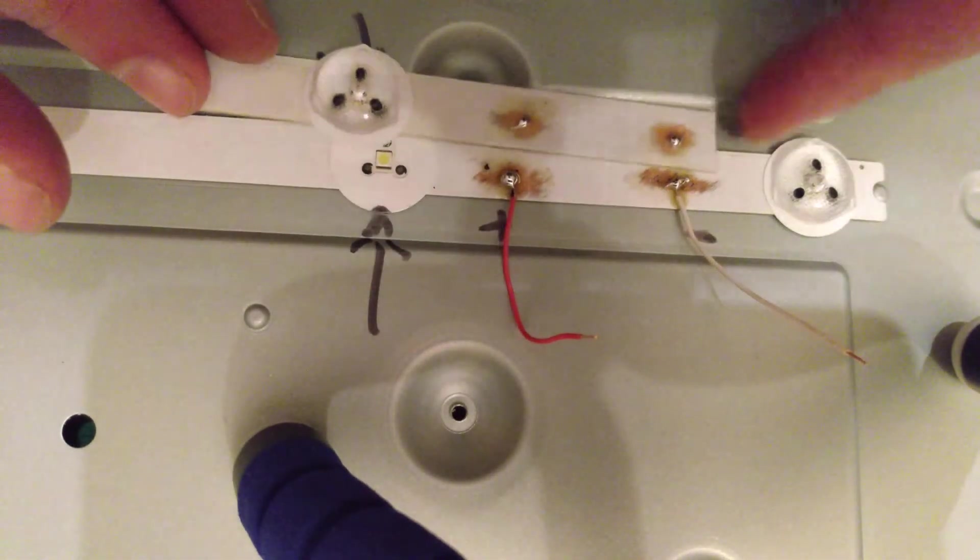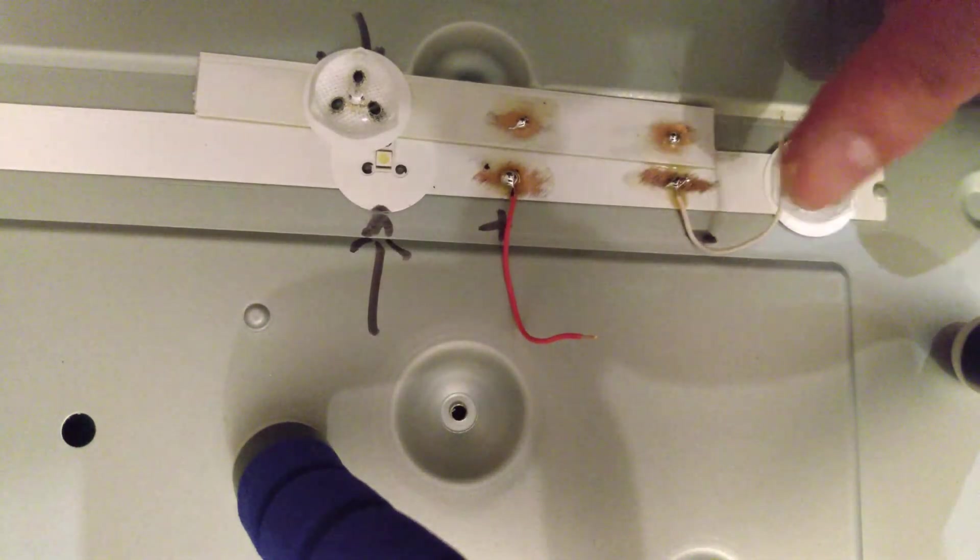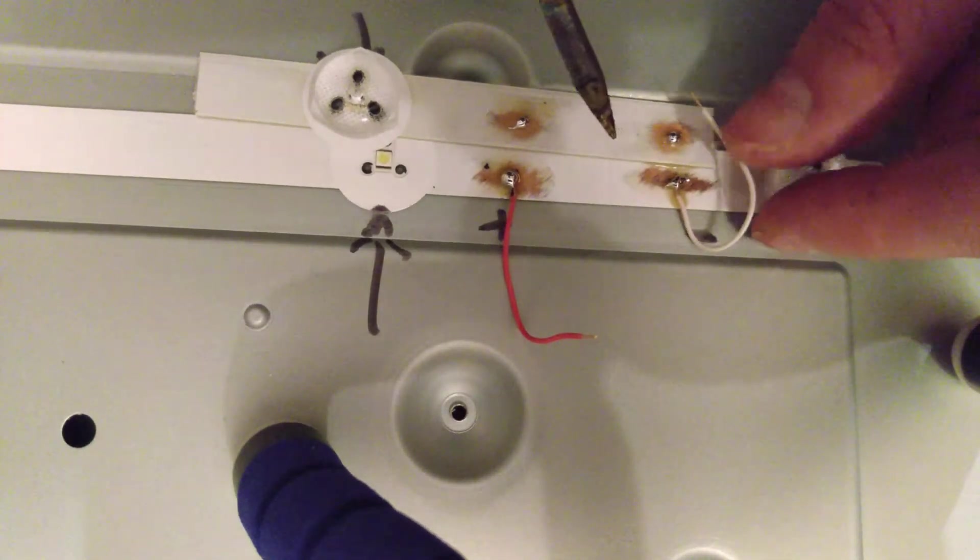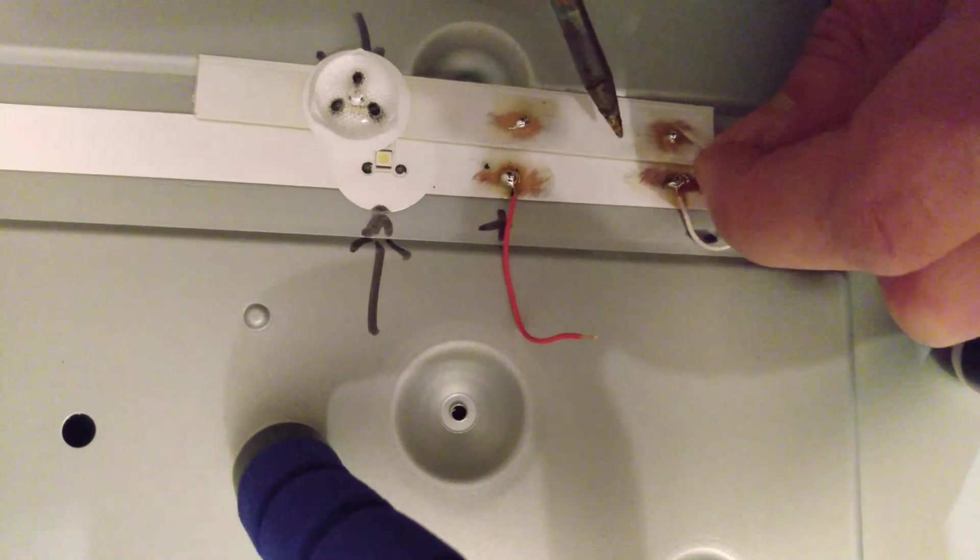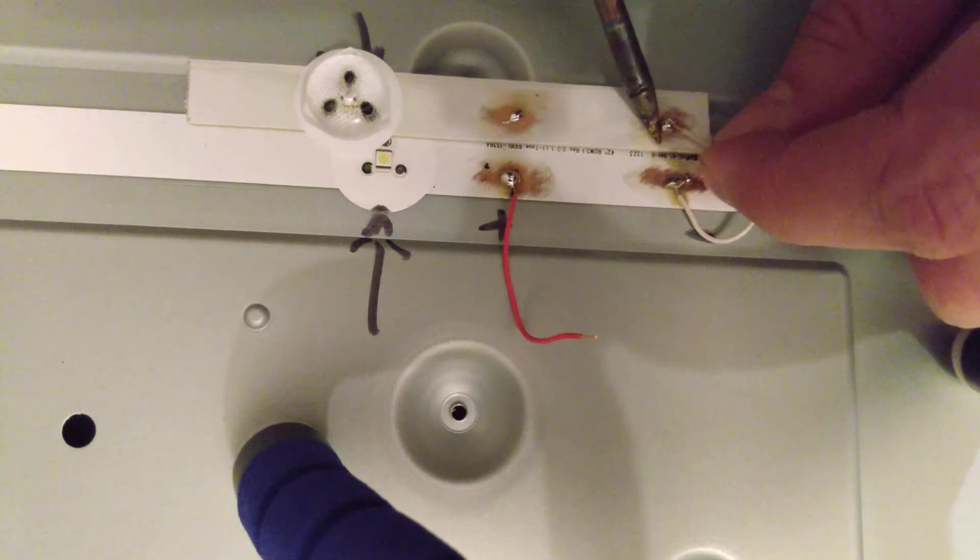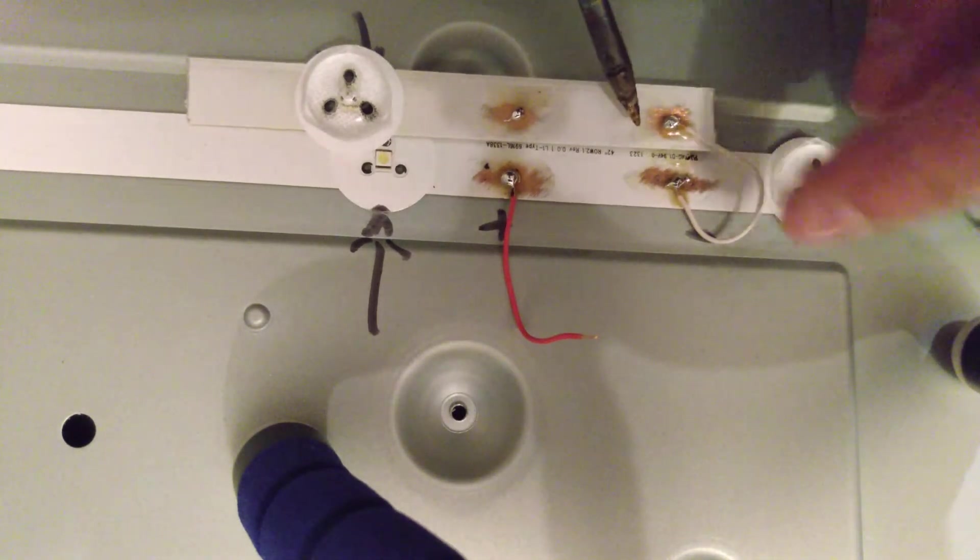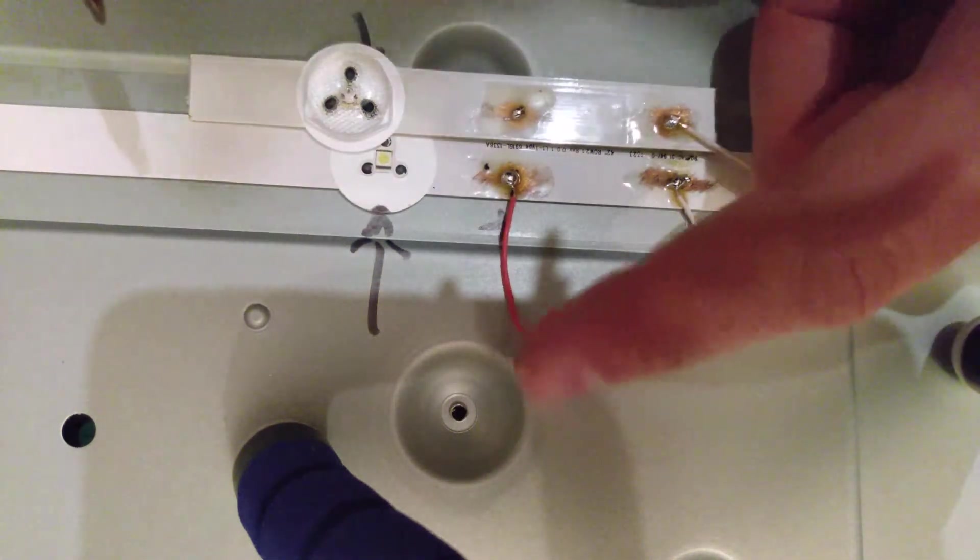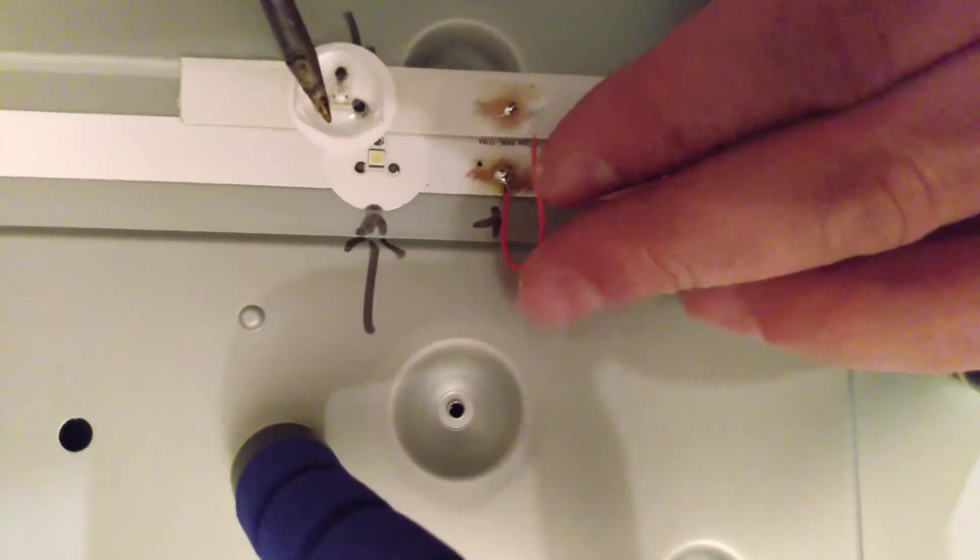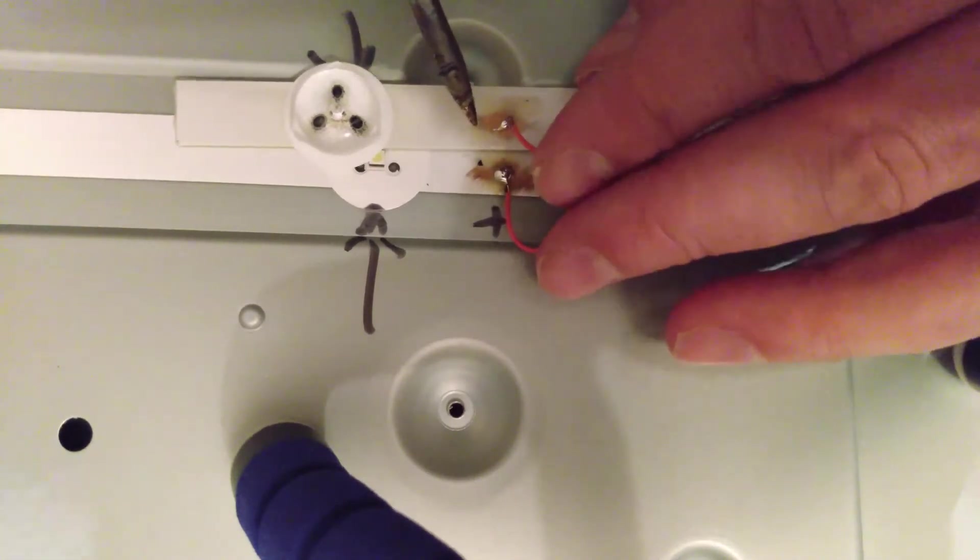Okay, so now I'll bend that over to the negative. Now solder onto this one. That's quite hot. Okay, well that's stuck on there. Now I'll do the positive side as well.